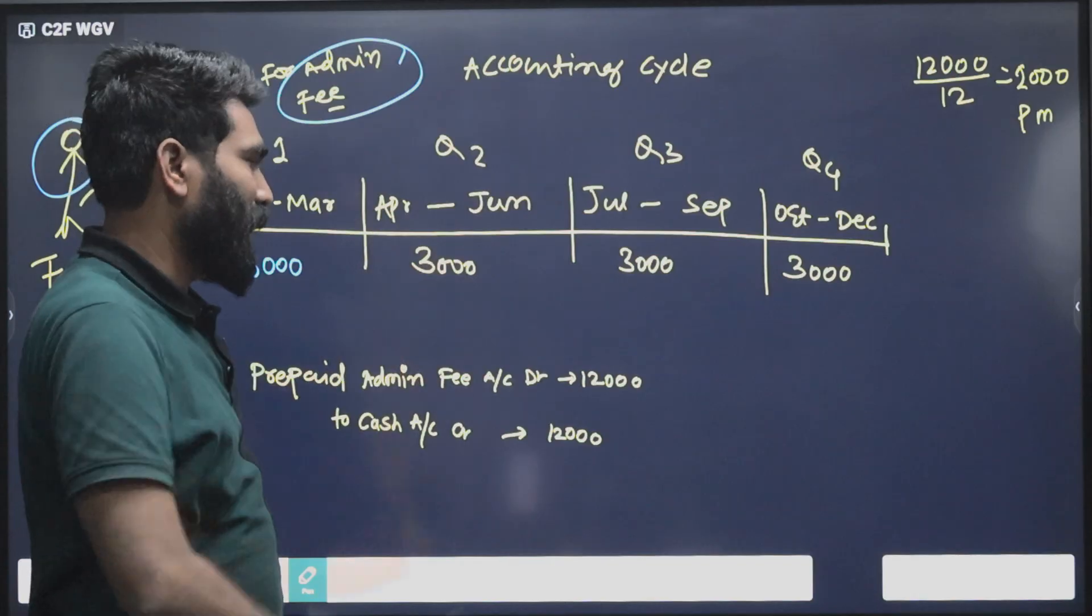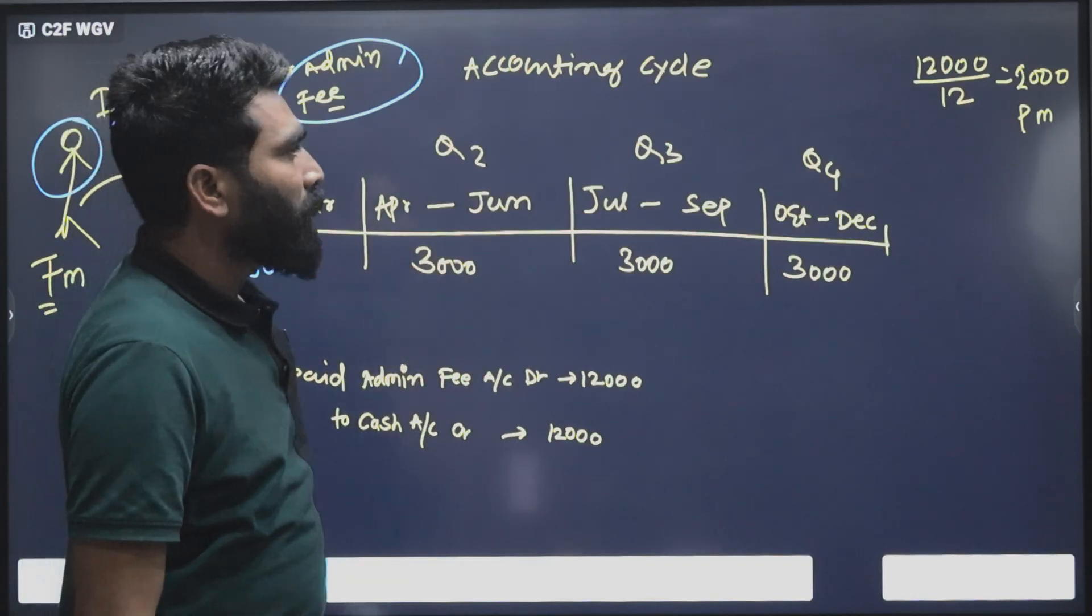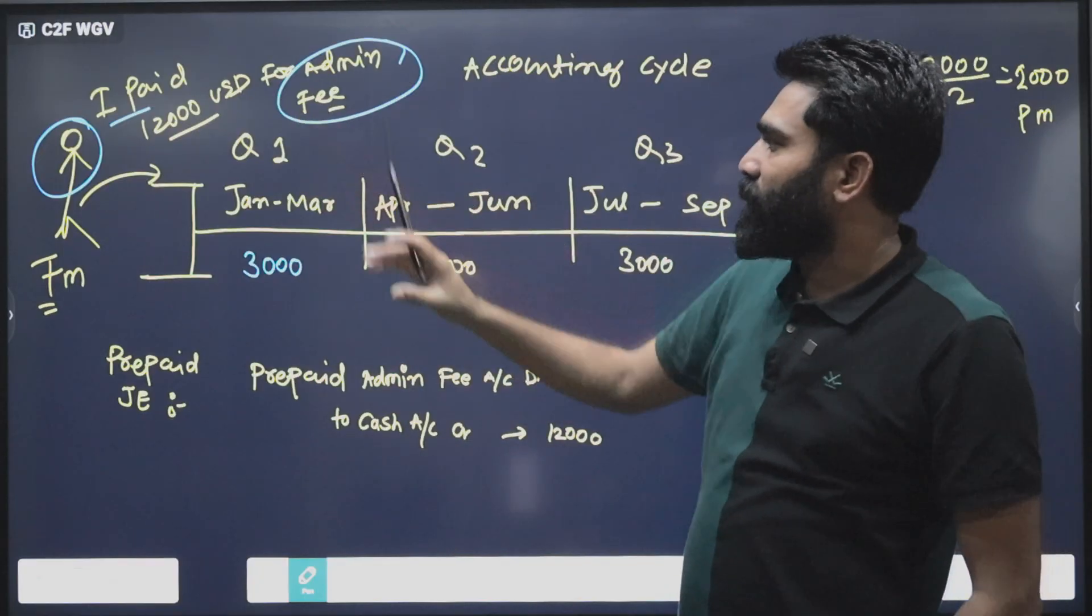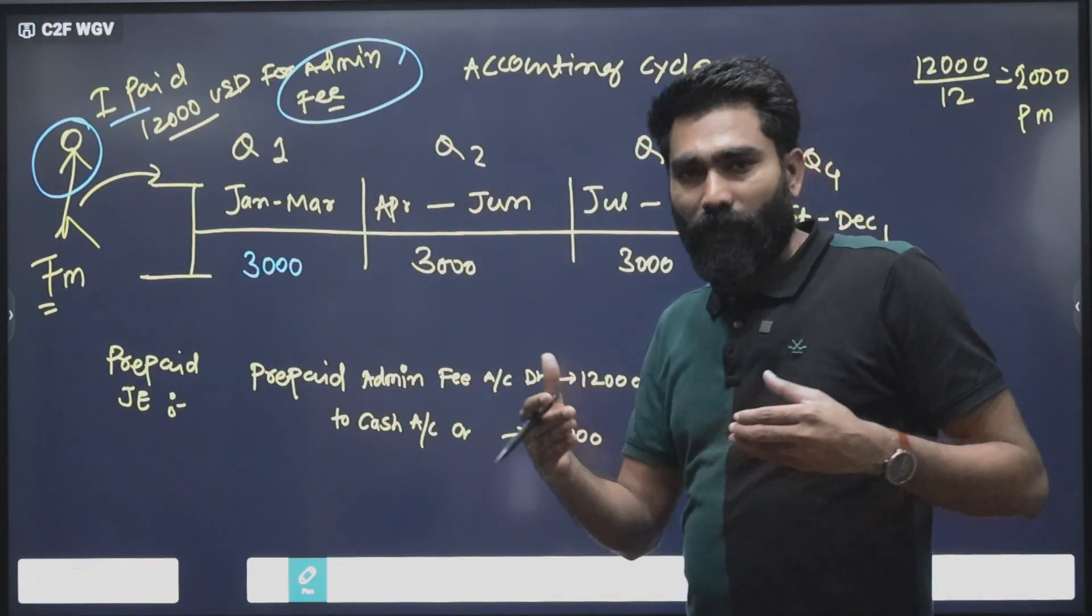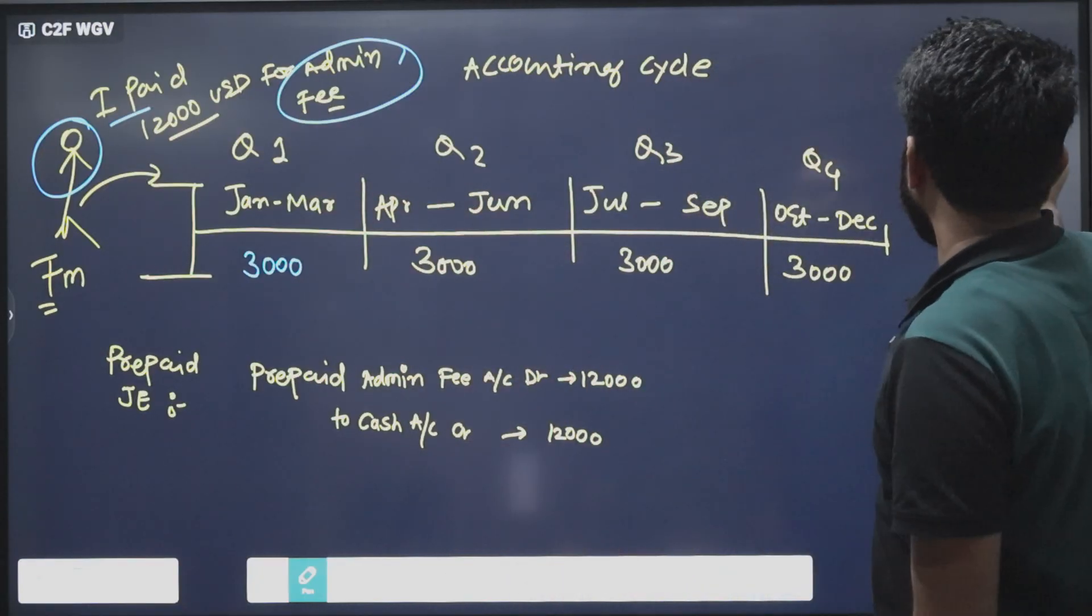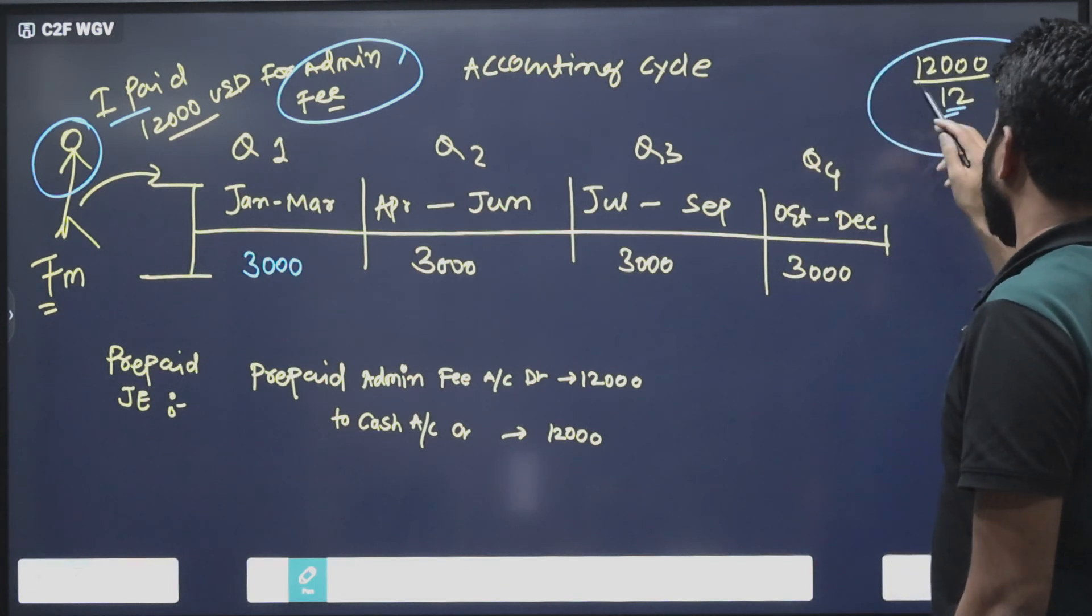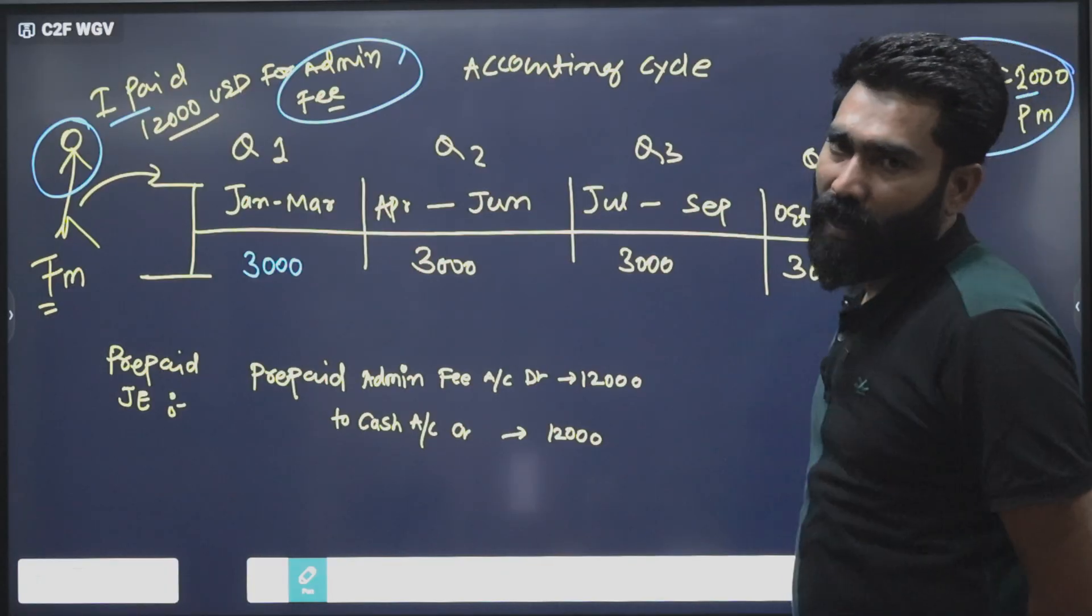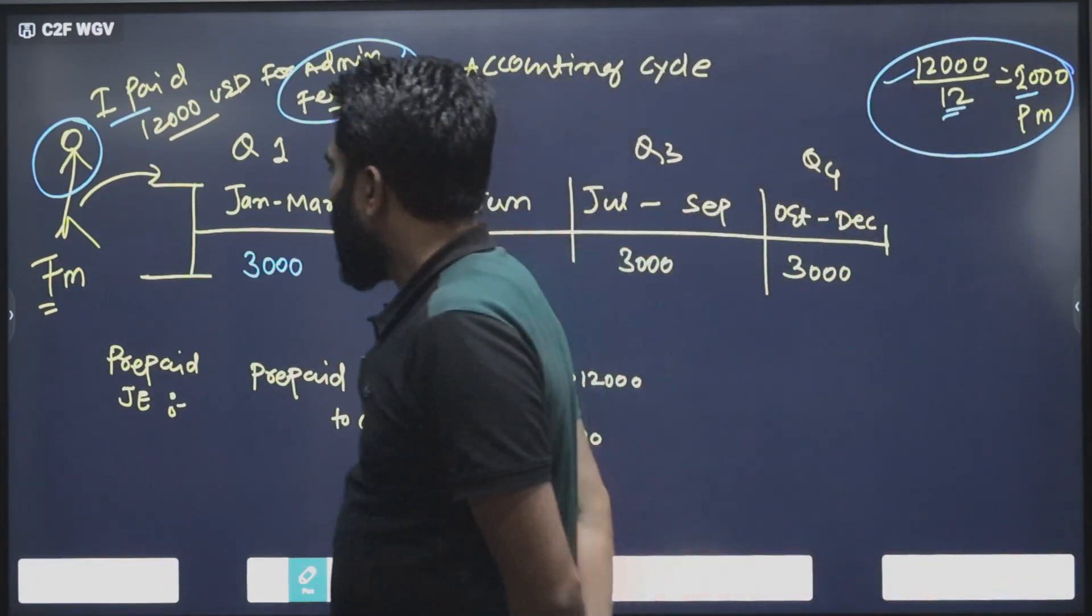Since we know the $12,000 is the admin fee for the entire year, we need to first split it across 12 months. So $12,000 divided by 12 equals $1,000 per month, and quarterly fees would be around $3,000.